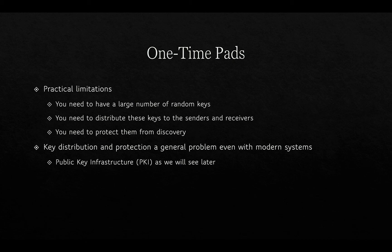There are practical limitations to one-time pads: you need a large number of random keys, you need to distribute those keys to senders and receivers, and you need to protect them from discovery. In espionage, agents would have been provided with a physical pad of written random codes used to encrypt and decrypt messages from controllers. This is a general problem of modern systems, and one solution — as we'll see — is using public key infrastructure.